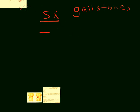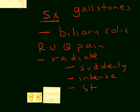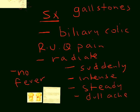The classic presentation is something called biliary colic. Biliary colic is right upper quadrant pain that can also radiate to the back. It presents suddenly and can be pretty intense, then becomes steady in its intensity, and eventually subsides as a dull ache. What's important to remember — often shown in clinical vignettes — is that there is no fever. The absence of fever helps you differentiate gallstones from inflammation of the gallbladder.